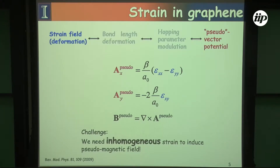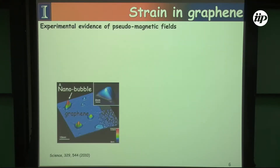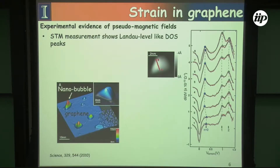Now we have to figure out how we can exactly strain graphene, because we need inhomogeneous strain in order to generate the gauge fields required to change the electronic properties of graphene. There is a lot of evidence — also pointed out in one of the tutorials — that strain has real effects in graphene. The most obvious example is in these nanobubbles in graphene, where scanning across a nanobubble reveals Landau levels forming as a function of sample voltage, persistent on both sides, based on the strain-induced pseudo-gauge fields.